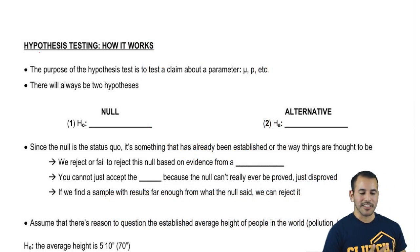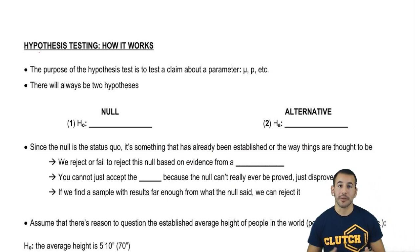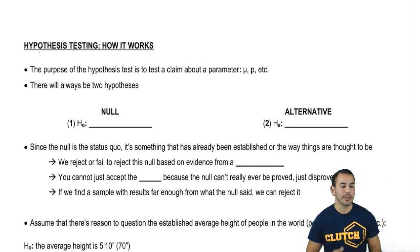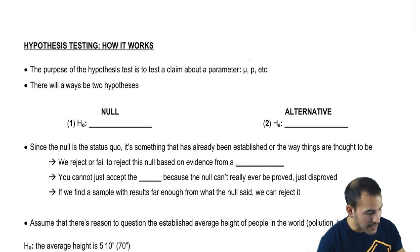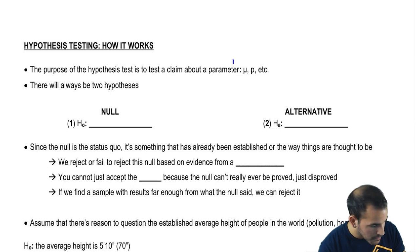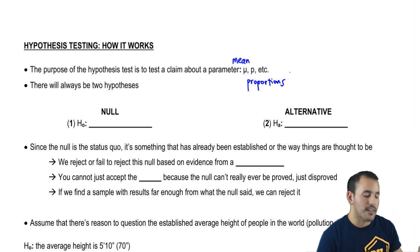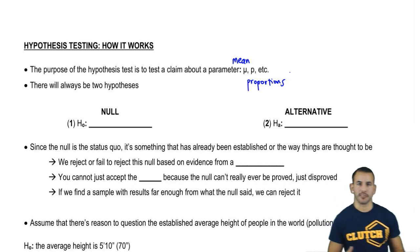The purpose of a hypothesis test is to make a claim about a parameter. Parameters are based on populations. The two we've been working with recently are the mean, or mu, and p, which is proportions. These are things we've seen in the last set of videos on sampling distributions.